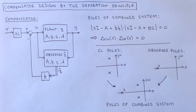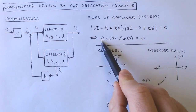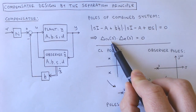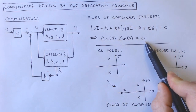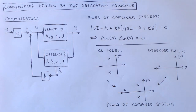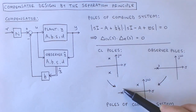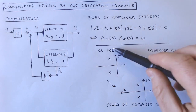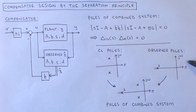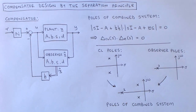A root of the closed-loop characteristic equation will make the closed-loop characteristic polynomial zero, and will therefore also be a root of the combined system. A closed-loop pole will therefore also be a pole of the combined system. By the same reasoning, an observer pole will also be a pole of the combined system. We can therefore conclude that the poles of the combined system are the combination of the closed-loop poles and the observer poles. This is called the separation principle. One can therefore design the state feedback and observer separately and know that the poles of the combined system is simply the combination of the poles of the separately designed state feedback and observer.